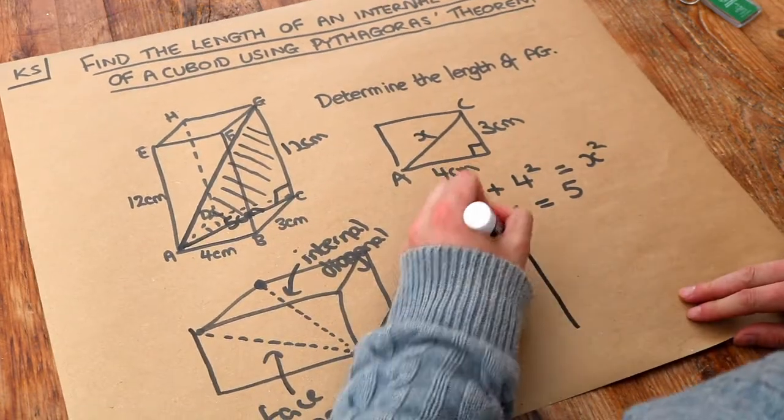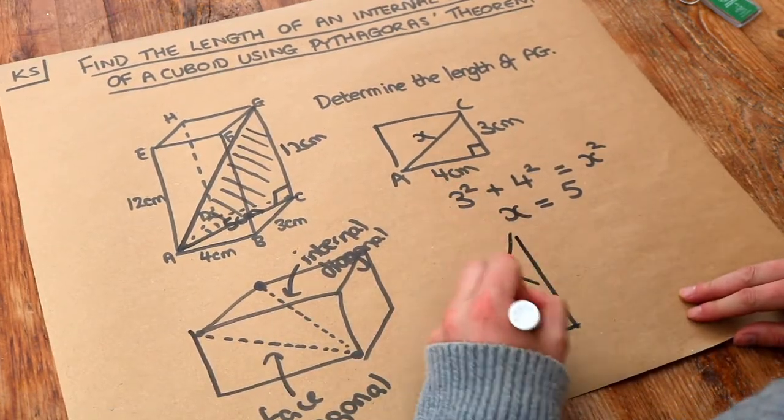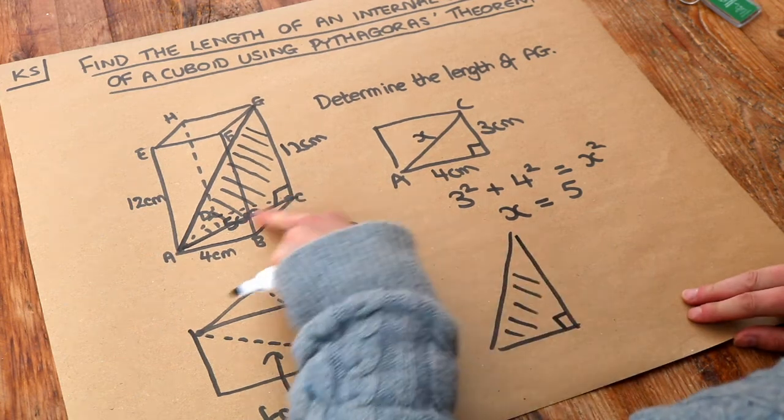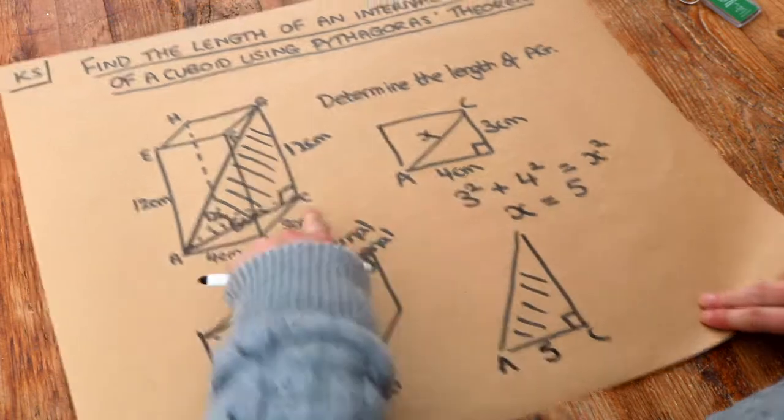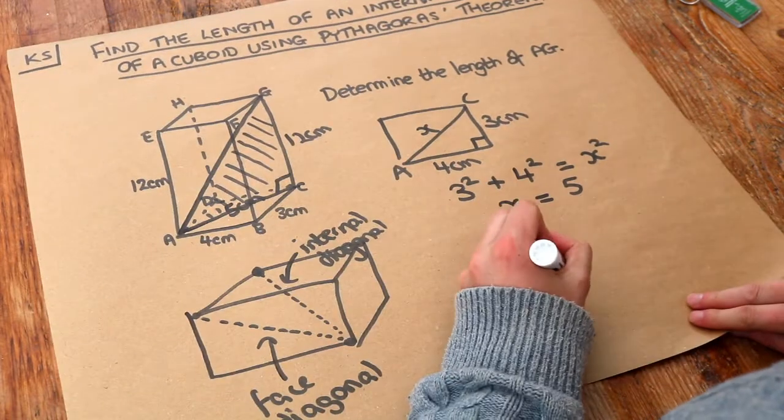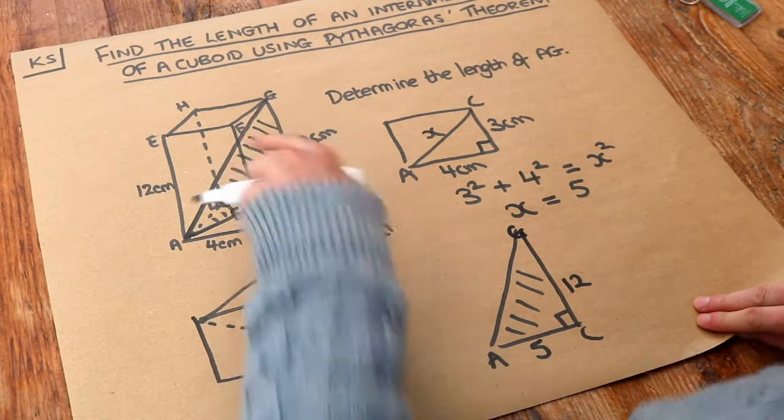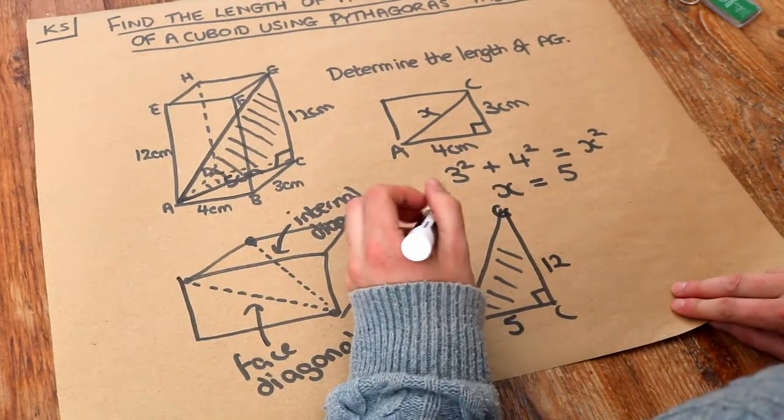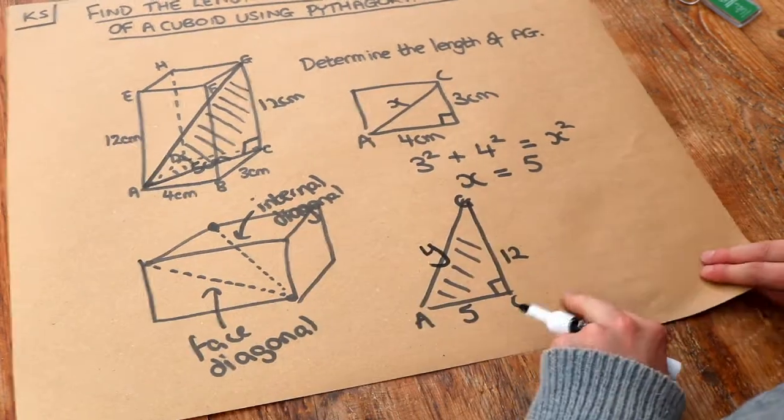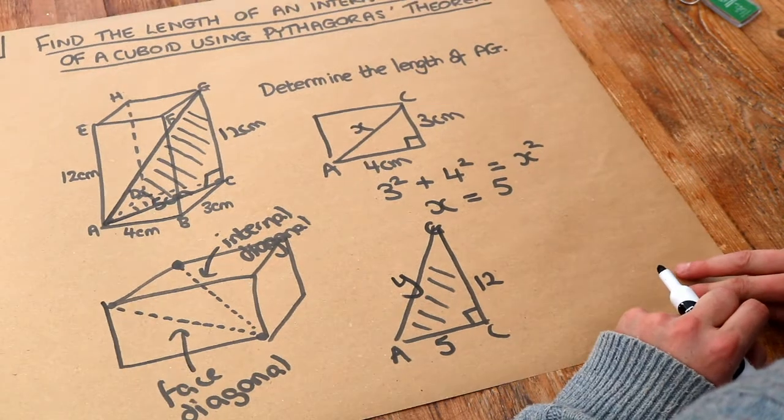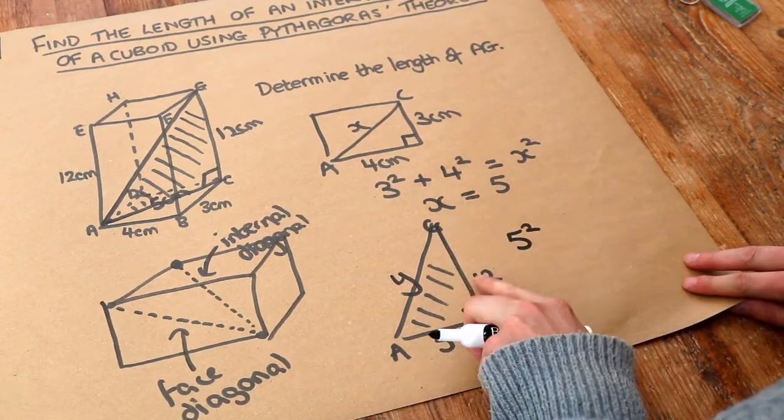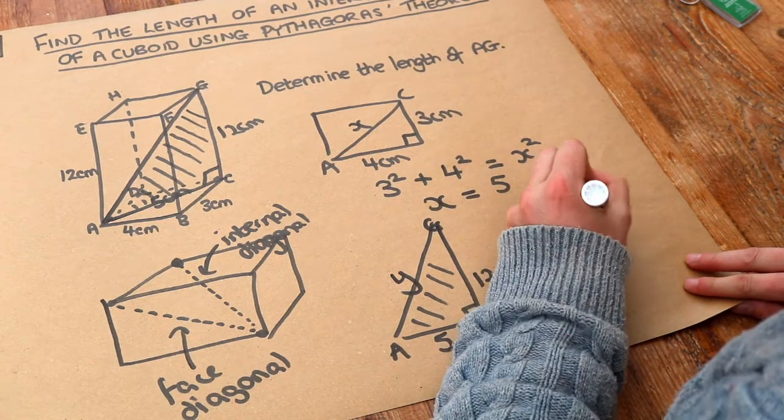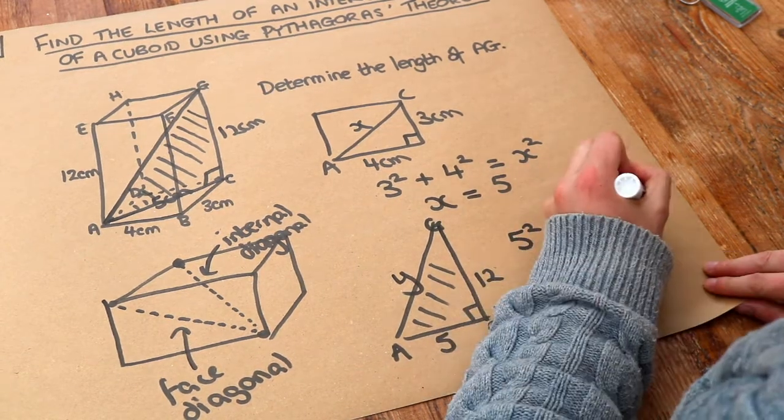So let's draw that big shaded rectangle separately. We've got that bottom length AC is equal to 5. We've got the height CG is equal to 12. And we want to find AG. So let's call that Y. Now we use Pythagoras again. We do a shorter length squared plus the other shorter length squared is equal to the hypotenuse squared.